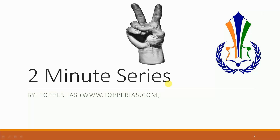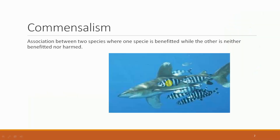Hello and welcome to the 2 minute series. The topic for today is commensalism. We have discussed mutualism — another type of interaction between species — and commensalism is somehow related to mutualism. It is an association between two species where one species is being benefited, whereas the other species is neither benefited nor harmed. In mutualism, both species were benefited; here, only one species is being benefited.